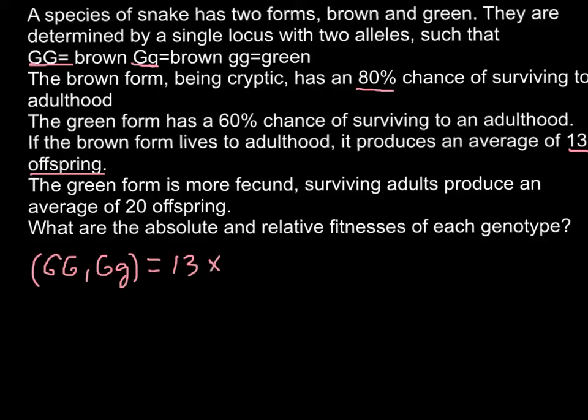So we have to multiply this number by 80%, and the answer here would be 10.4 offspring for this genotype, that is brown.